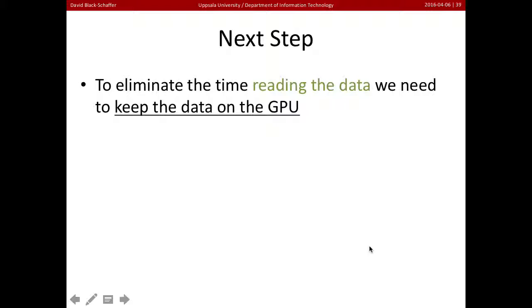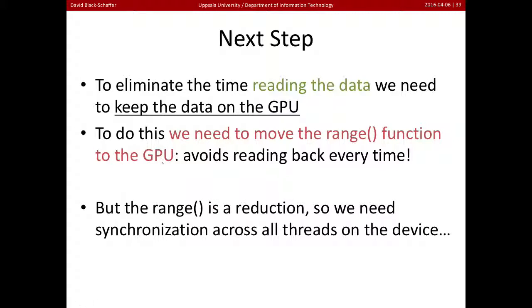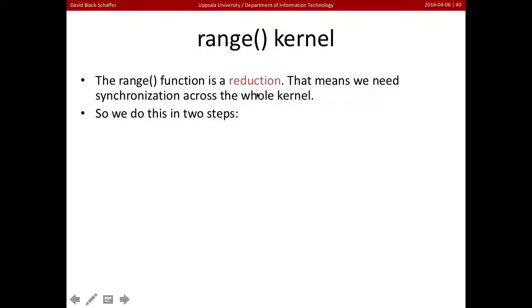To get rid of the time reading data, we need to keep the data on the GPU — which is what we did in the first optimization. To do that, we need to move range to the GPU, and this means we won't have to send the data back every time. But range is a reduction: it goes over all of the output data and finds the minimum and maximum values. To do a reduction, we need some synchronization, and doing synchronization on GPUs isn't great.